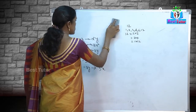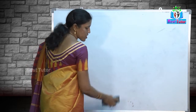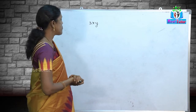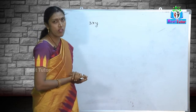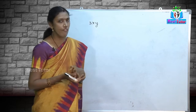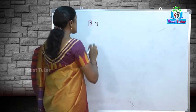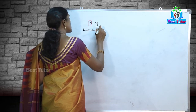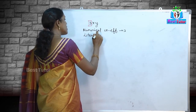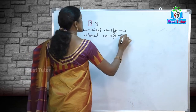We have learnt about constants, variables, terms, expressions, and coefficients. In the term 3xy, there is a numerical value and variables. The numerical coefficient is the number in the term — which is 3.